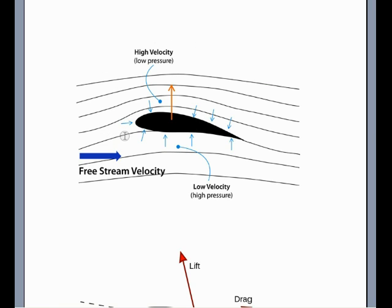And likewise, the lower or less camber or less distance on the bottom of the wing will cause a speed lower than the top of the wing at the bottom of the wing.